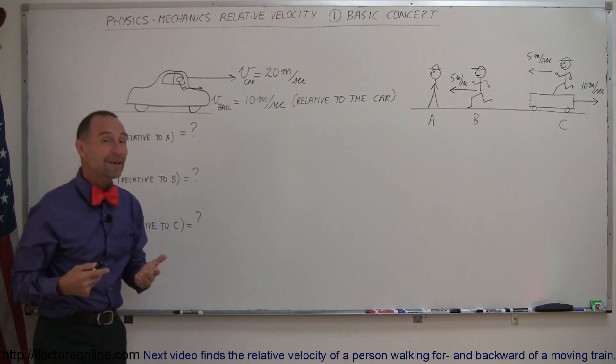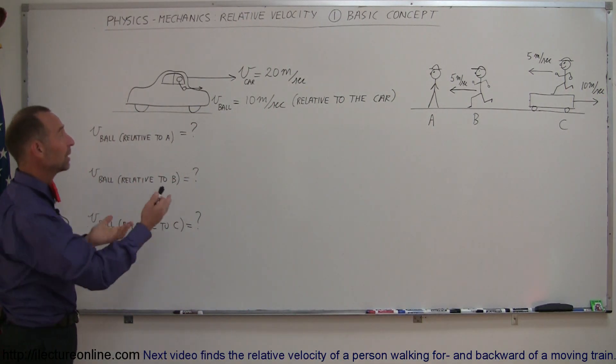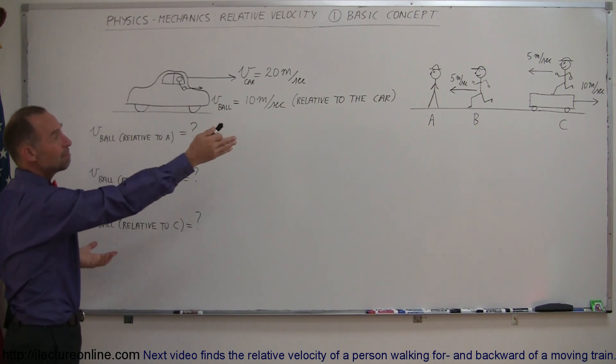Now what do Observer A, B, and C see as far as the speed of the ball? How fast is the ball moving relative to A, B, and C?